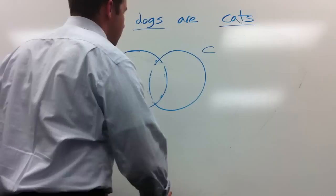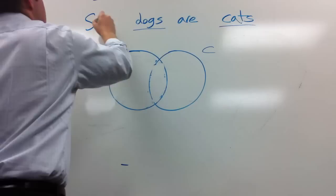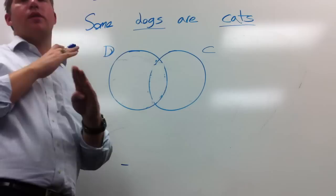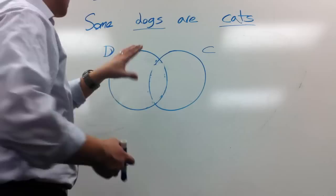How about moving on to I? Some dogs are cats. So universals we shade, particulars, I's and O's, we put an X. We block out with shading, but we actually use X marks the spot for particulars. Some dogs are cats.